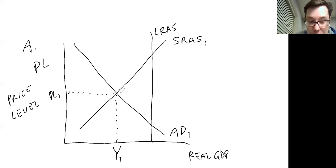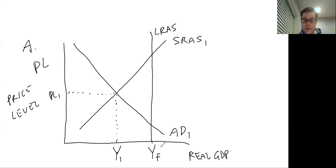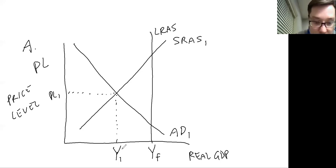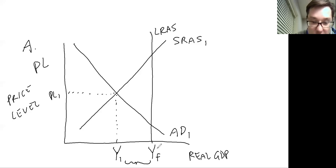If they asked you to draw an inflationary gap, it would be flipped — the intersection would be to the right, and the long-run aggregate supply curve would be to the left. They wanted you to label the full employment output as Y sub F, standing for real GDP at full employment. If we're on the long-run aggregate supply curve, that means we're utilizing all our resources and we are at full employment. The recessionary gap is the difference between Y sub F and Y sub 1, where we're currently at — our current equilibrium.